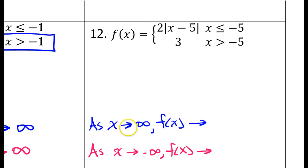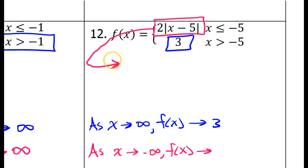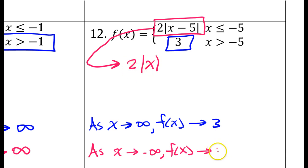As x approaches positive infinity, we are definitely going to be bigger than negative 5, so we are talking about this piece of the function. That's just a constant, so it's definitely approaching 3. Now when x is approaching negative infinity, we are definitely less than negative 5, so we will be approaching this other piece. As x gets more and more negative, the constant is going to quickly become irrelevant. So this is going to be approaching 2 times the absolute value of x. As x becomes a very large negative number, the absolute value will make it a very large positive number. Times 2 will be an even larger positive number — so that is positive infinity.